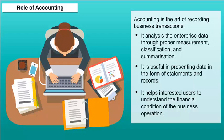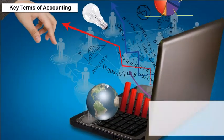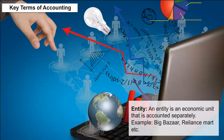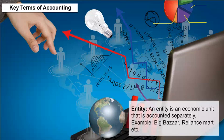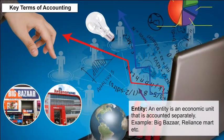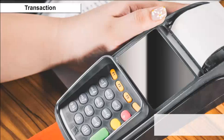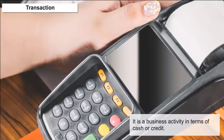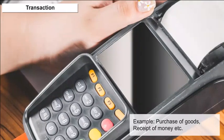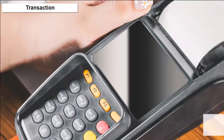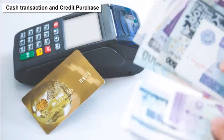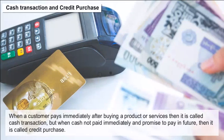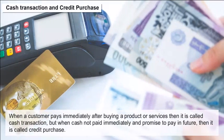Key Terms of Accounting — Entity and Transaction: An entity is an economic unit that is accounted for separately; examples include Big Bazaar and Reliance Fresh. A transaction is a business activity in terms of cash or credit; examples include purchase of goods and receipt of money. A cash transaction is when a customer pays immediately after buying a product or service. When payment is deferred, it becomes a credit transaction.